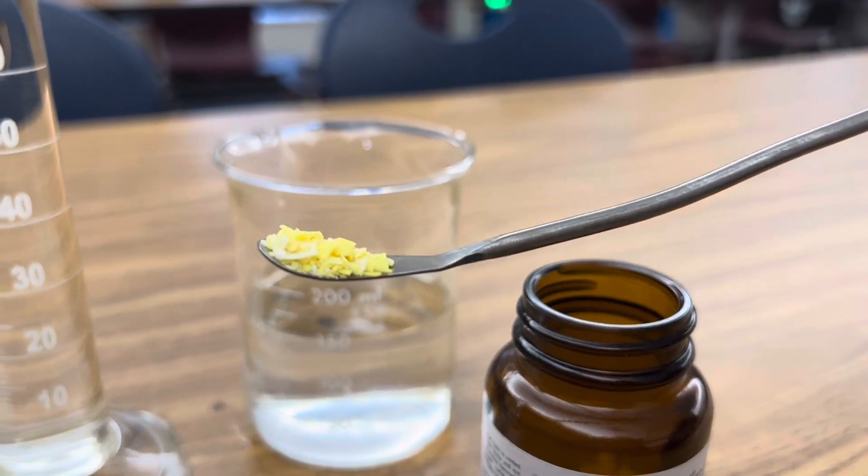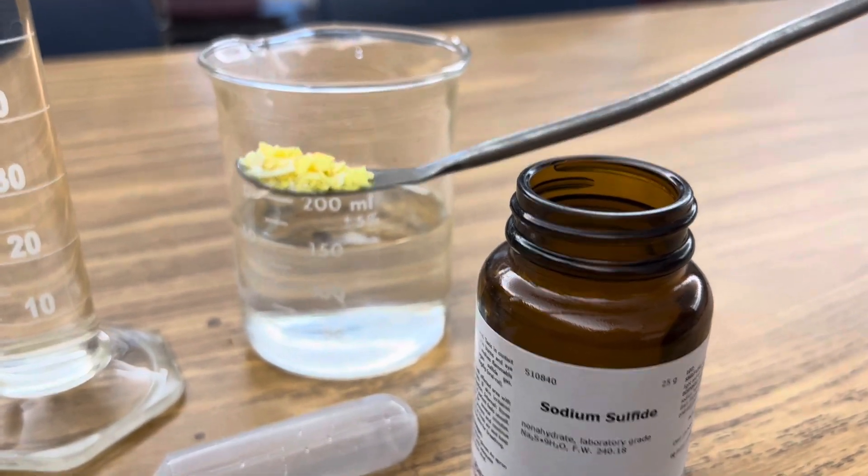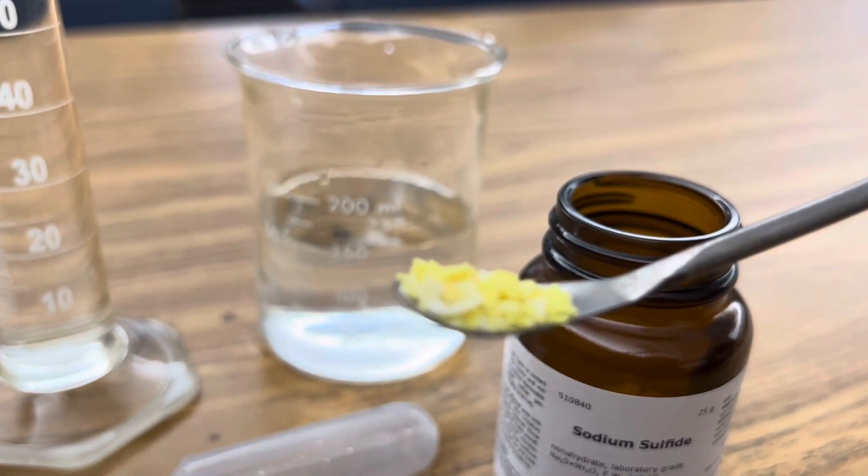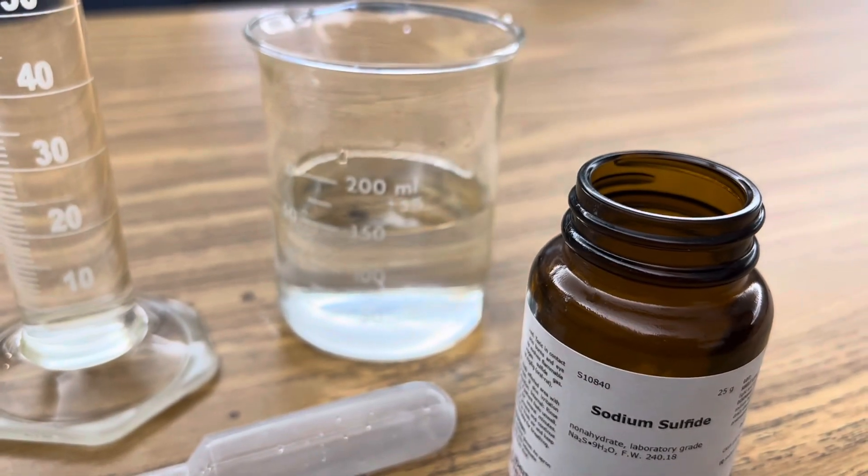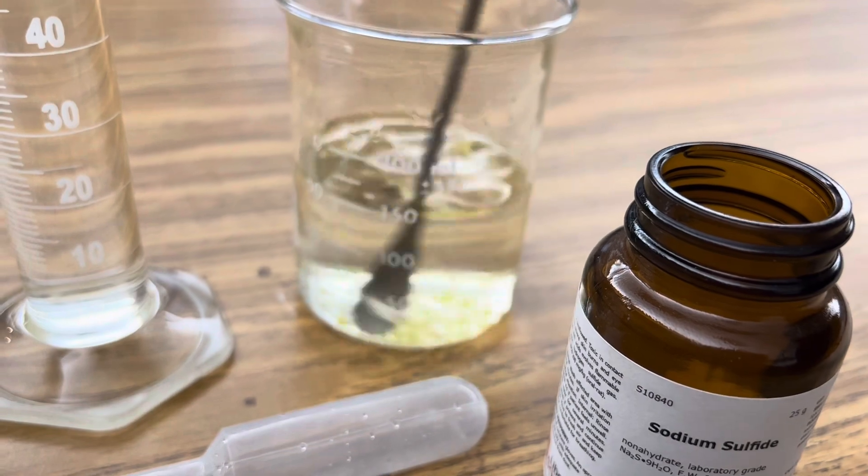Start by adding about four grams of sodium sulfide to 150 milliliters of distilled water. You'll see it's kind of a flaky white yellow compound. Stir that in until your solution is completely aqueous.